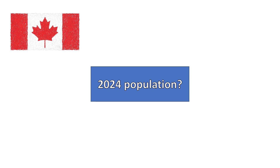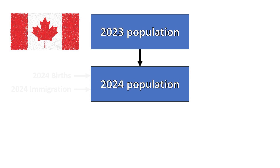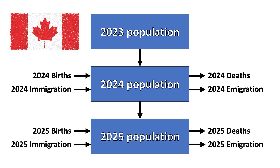Population is simple. To predict the population of Canada in 2024, all we need to do is take the population of Canada in 2023, then add the number of births and immigrants we expect in 2024, and subtract the number of deaths and the people moving out of Canada that we expect in 2024. To predict Canada's population in 2025, we will simply repeat the process using our estimate for Canada's 2024 population.